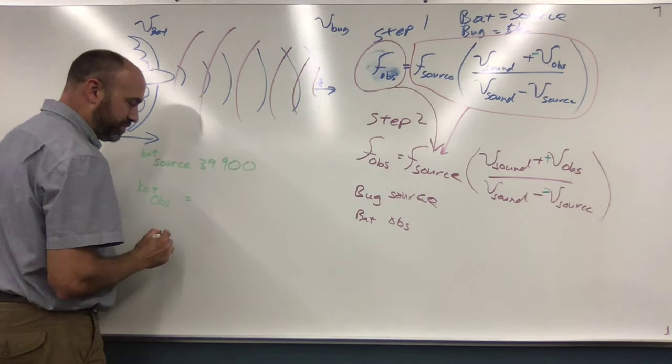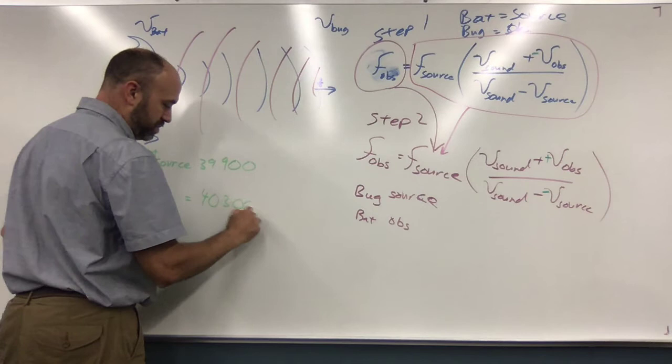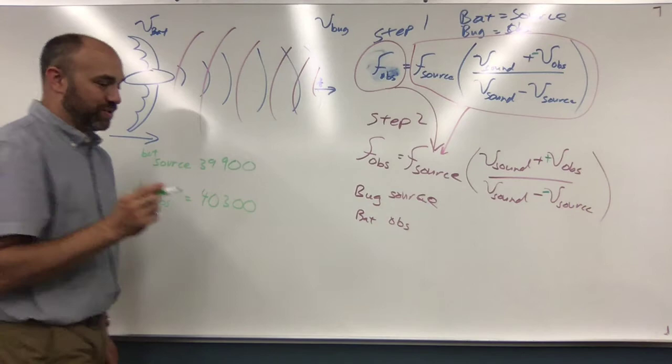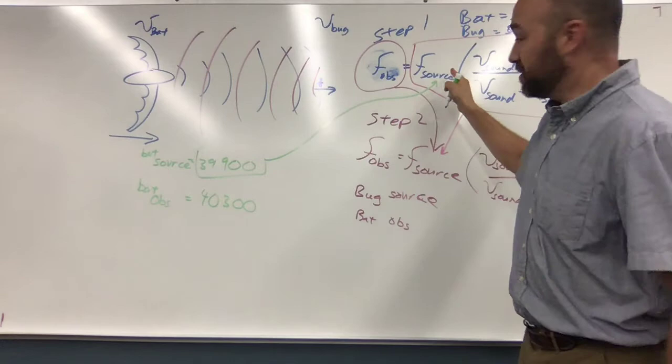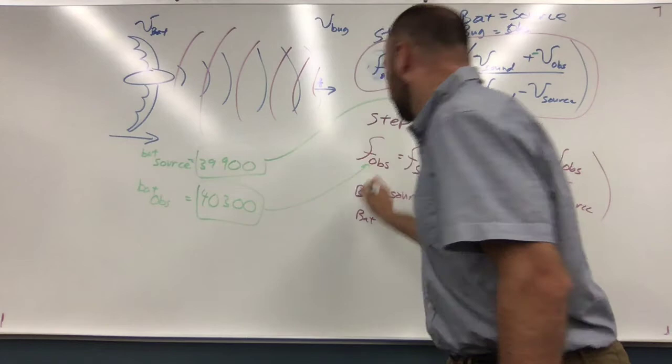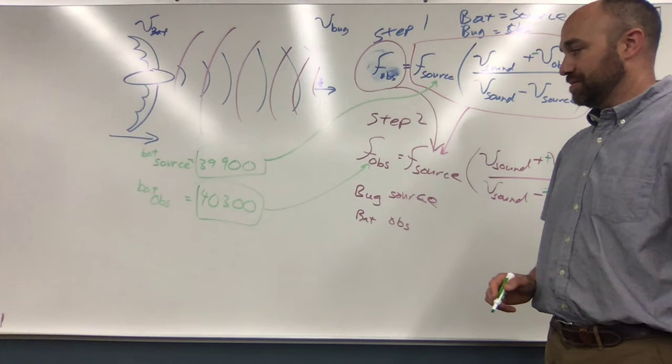And then the bat is source and bat observes. What was the second one? 40.3 kilohertz. Okay, so do you see how I converted that? Yeah, but which one's which? Well, that's what I'm getting to here. Okay, so this one here is that, because it's the source. But this one here is this.